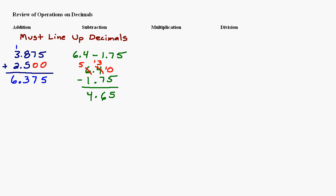With multiplication it's a little different — you do not need to line up the decimals. You're going to arrange the numbers just like you would if you were multiplying without any decimals, and then I'll show you where to place the decimal in the answer.